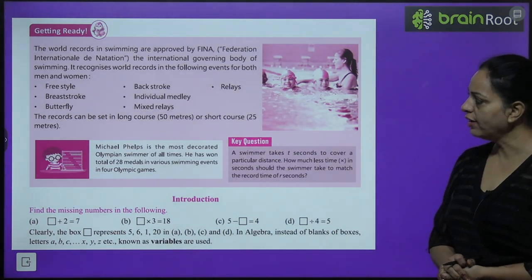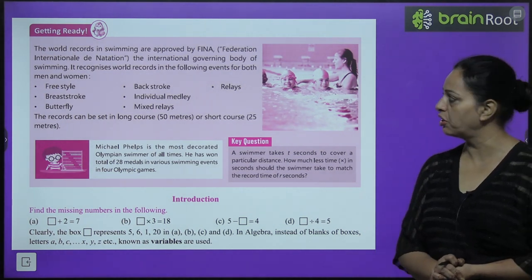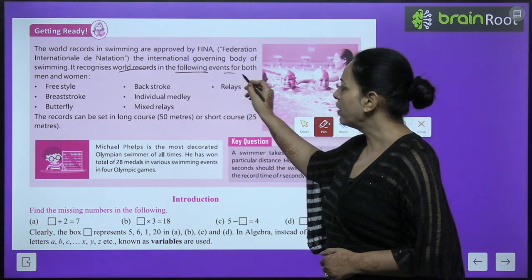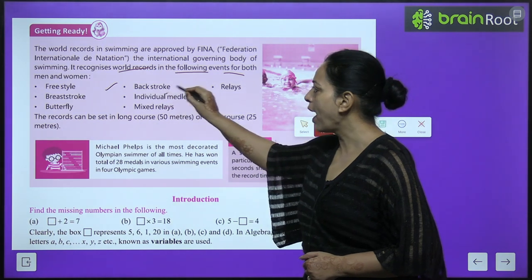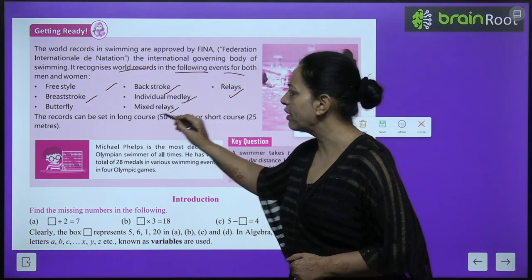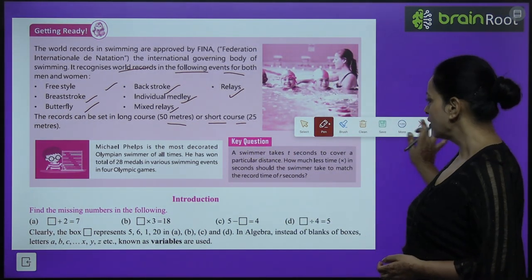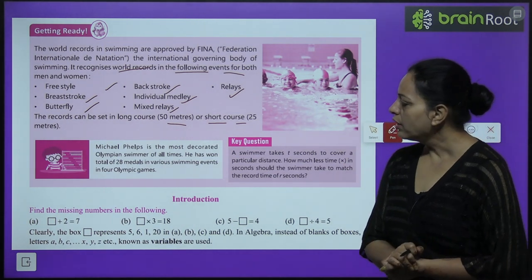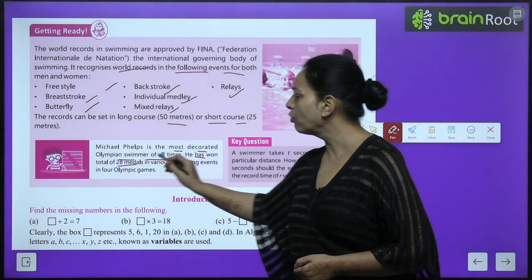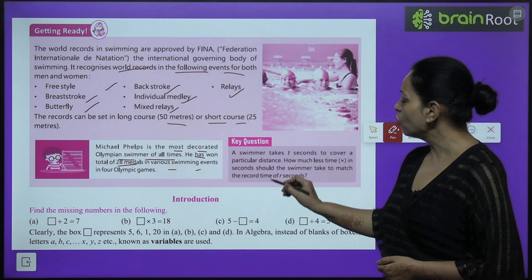Let us start. World records in swimming are approved by FINA, the Federation Internationale Natation — the international governing body of swimming. It recognizes world records in events like freestyle, backstroke, relay, breaststroke, individual medley, mixed relay, and butterfly. Records can be set in long course (50 meters) or short course (25 meters). Michael Phelps is the most decorated Olympian swimmer of all time.